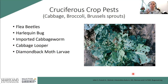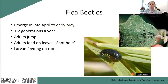Now we'll zero in on specific crops, starting with crucifer or cole crops — cabbage, broccoli, Brussels sprouts. If you planted them in spring, you're probably ready to harvest and replace with a summer crop. Flea beetles are probably the first insect pest you'd encounter at the beginning of the season, and likewise will be among the first to arrive on fall plantings. They emerge in April and May, with one to two generations that overlap with the spring planting window.